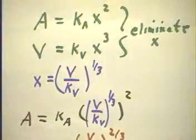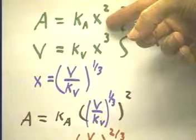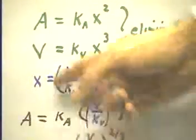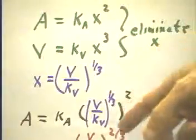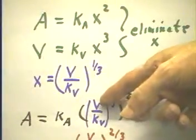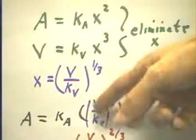Having obtained that, we substitute it in for x here. When we do that, we get A equals k_A, just like here, times the square of whatever x is, x being the one-third power of V over k_V. Then we have the square of this one-third power.